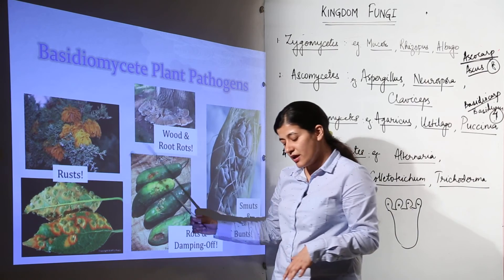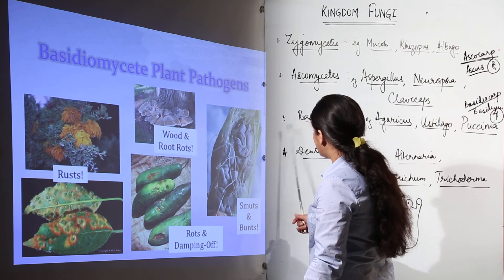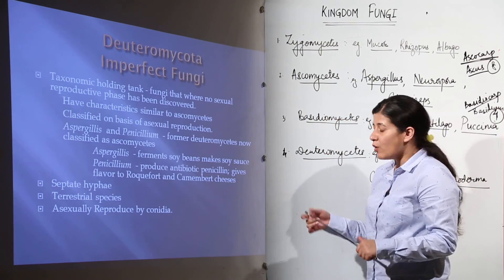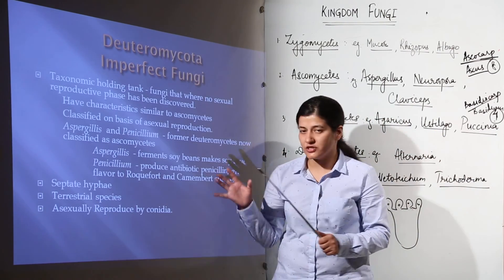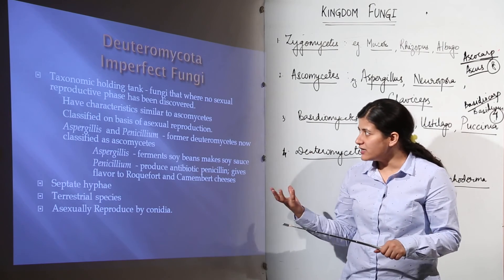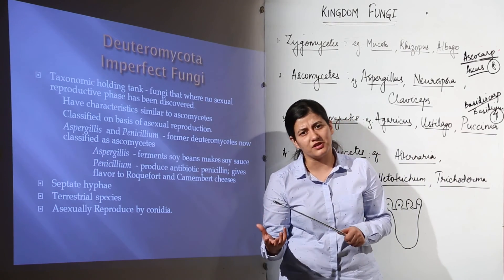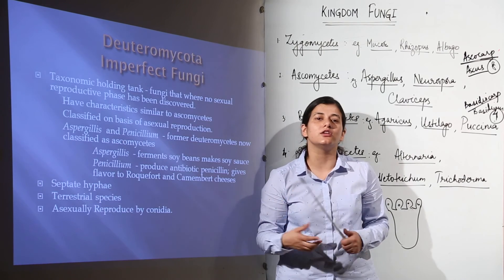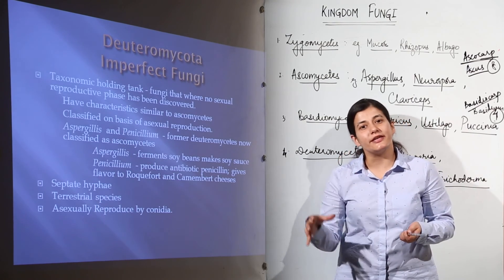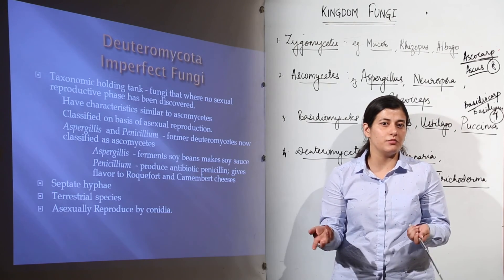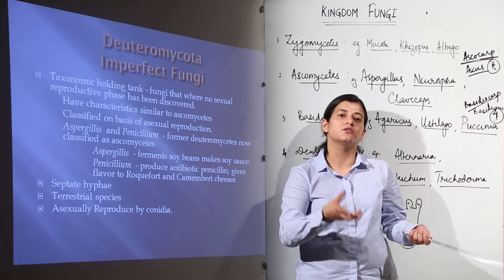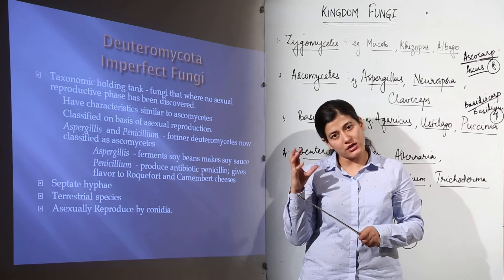The examples of Basidiomycetes are Agaricus — the simplest mushroom we consume; Ustilago — the genus responsible for smuts, those red-blackish spots that take up entire grains; and Puccinia, responsible for rusts that can destroy entire fields of paddy. Now the last division is imperfect fungi. Whatever imperfect fungi we have studied is in close contact with Ascomycetes; they are considered a taxonomic misfit.